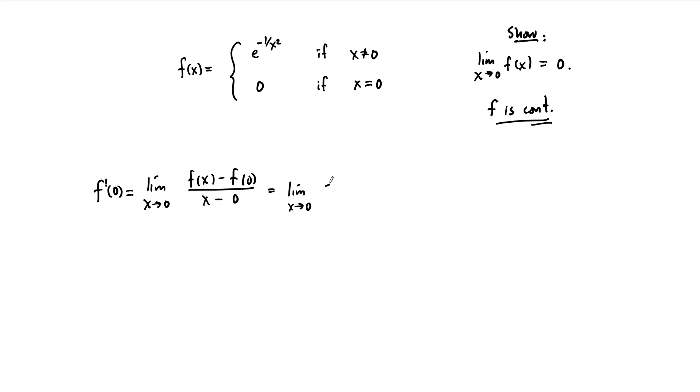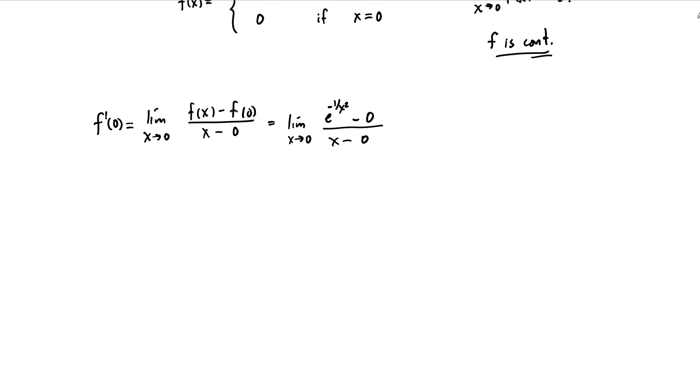And so this is e to the minus 1 over x squared minus f(0). Well, f(0) truly is 0, so that's 0. And then of course, this is just x minus 0. And at this point, we can simplify here, and we can write this as the limit as x approaches 0, e to the minus 1 over x squared over x.